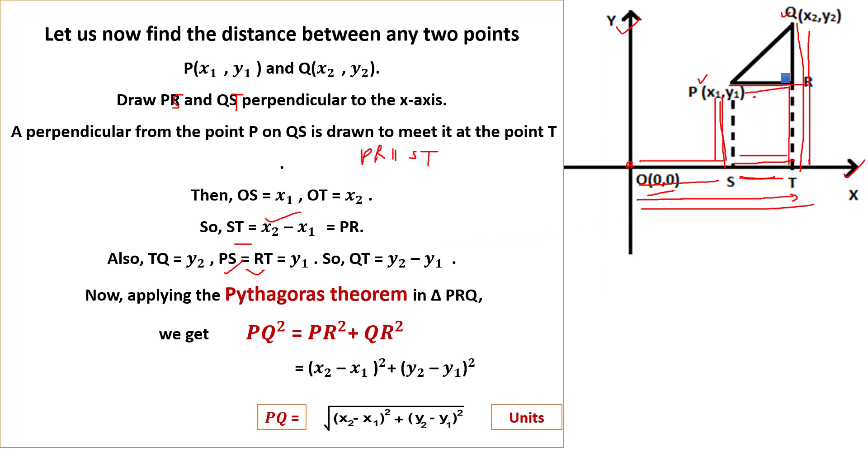So what will be the length of QT? QT is, I think, y2 minus y1.